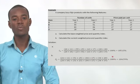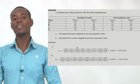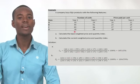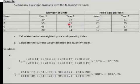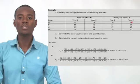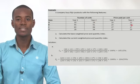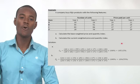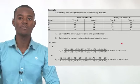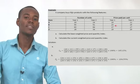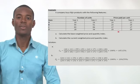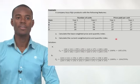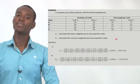For the Paasche index, which is the reverse, the current quantities become the weights instead of the base quantities. The formula is the same structure, but you multiply by the current quantity values. For the quantity index, the prices become the weights. Take some time and try it out for the quantity indices yourself. We'll call it a day here for this session — see you in the next one, thank you.